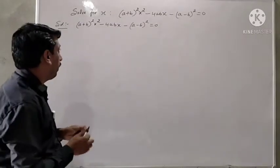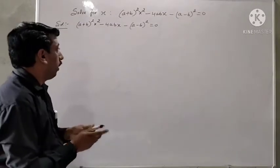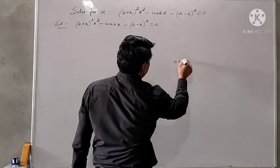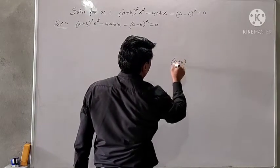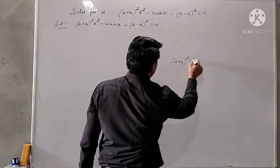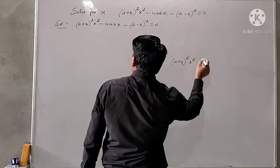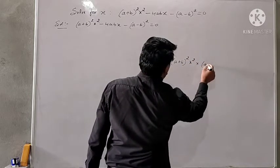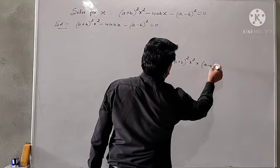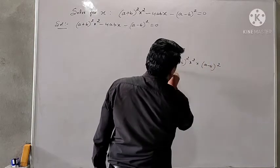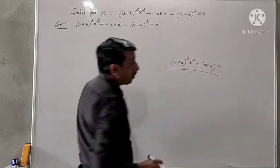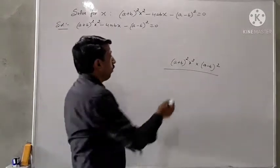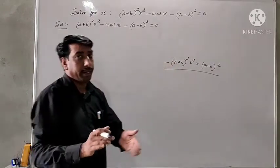Now, the product we need is (a plus b) whole square times x squared, multiplied by (a minus b) whole square. Because the coefficient of x squared is positive and the constant term is negative, the product of the two split parts is negative.